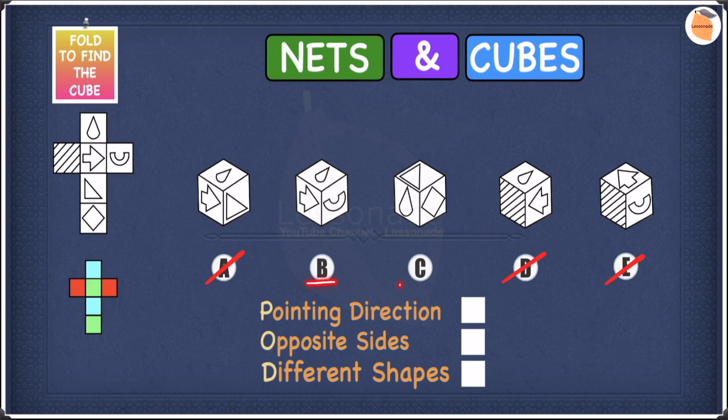Now we're left with B and C. So now we can put a tick next to pointing direction and let's move to opposite sides.